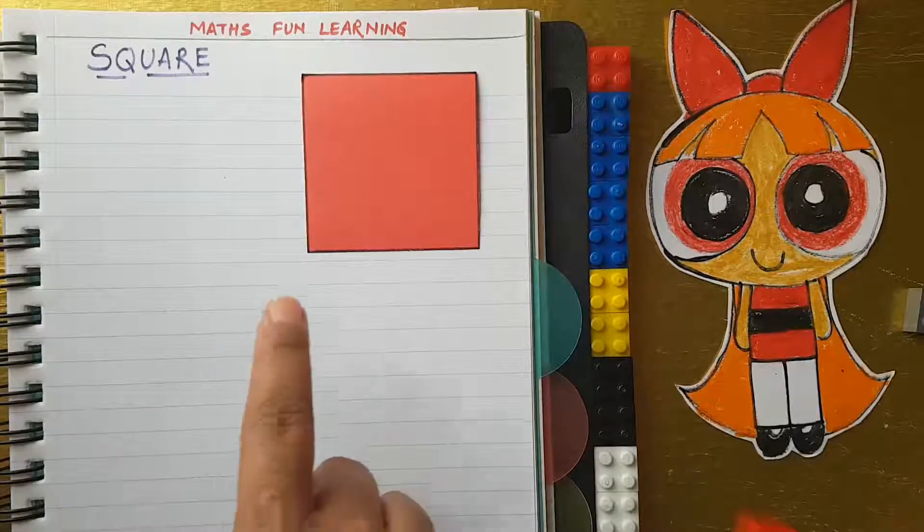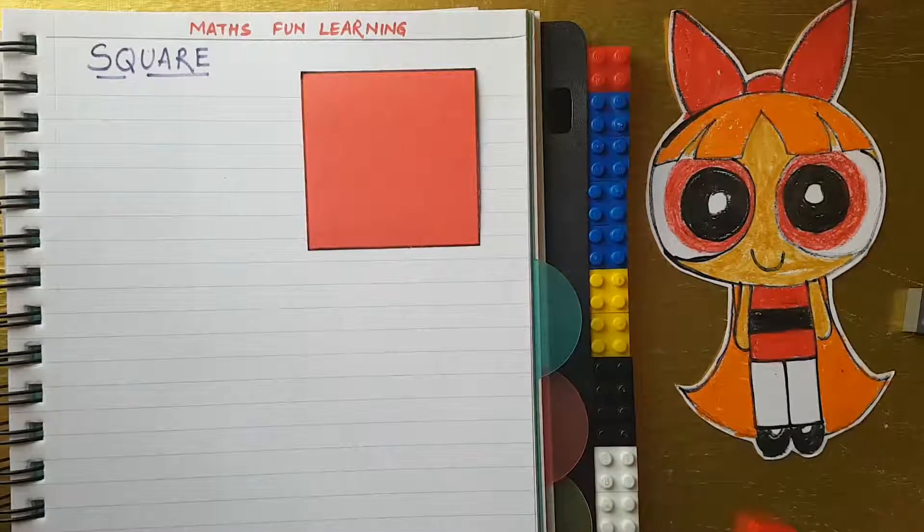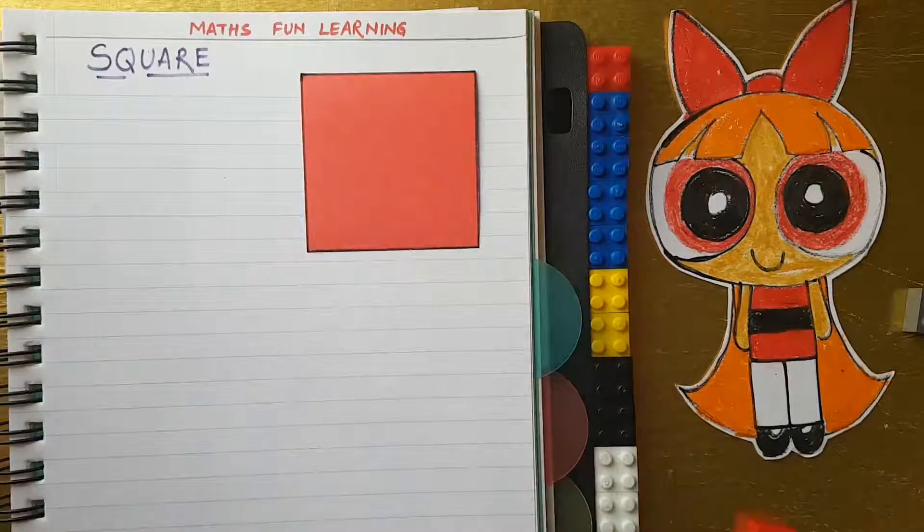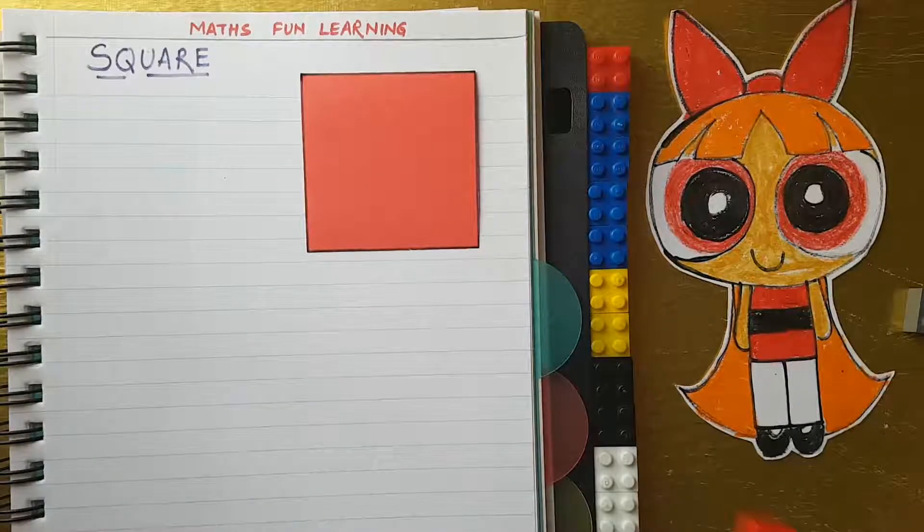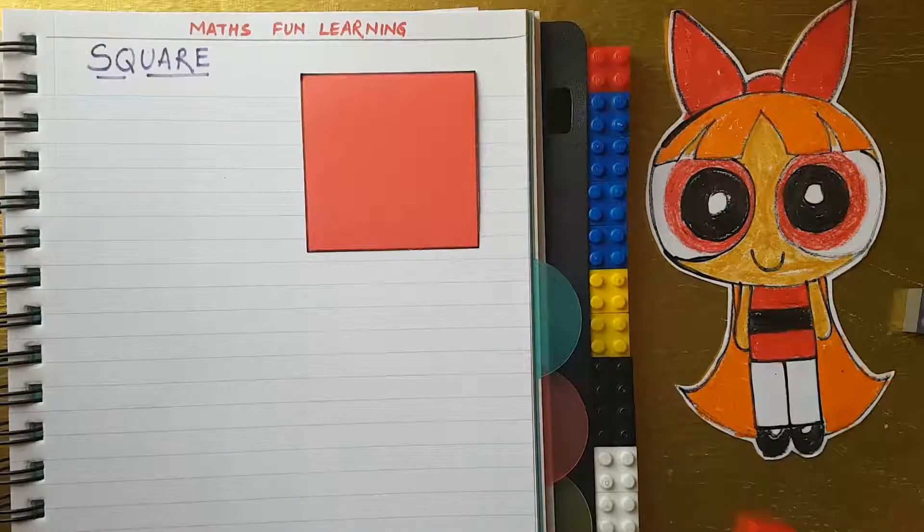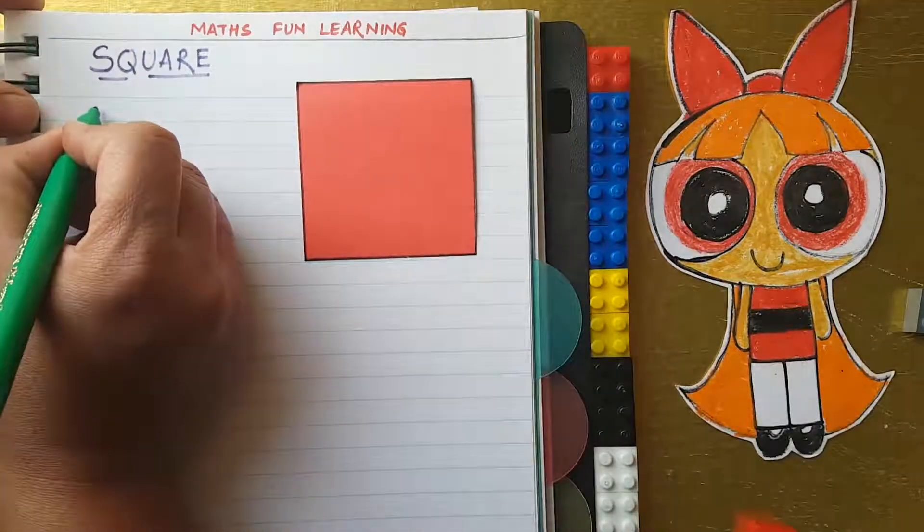We are going to learn here perimeter of square and area of square. First, we'll learn about the perimeter.